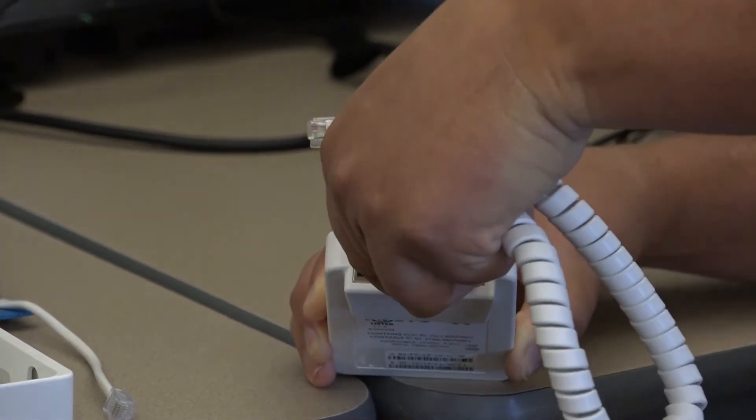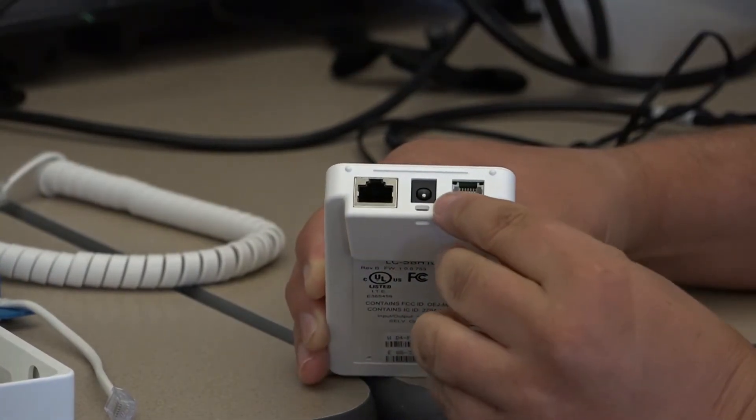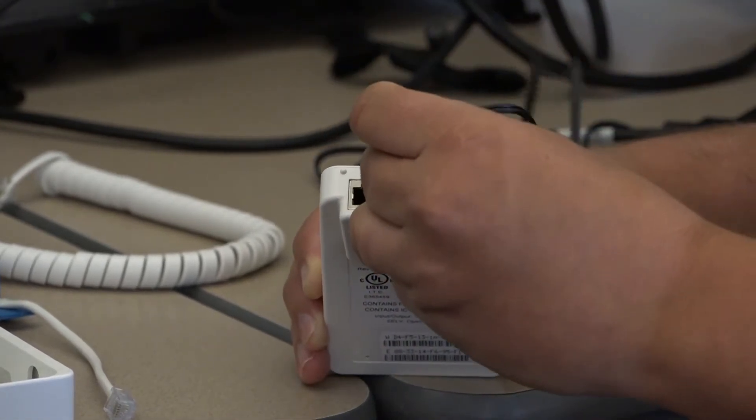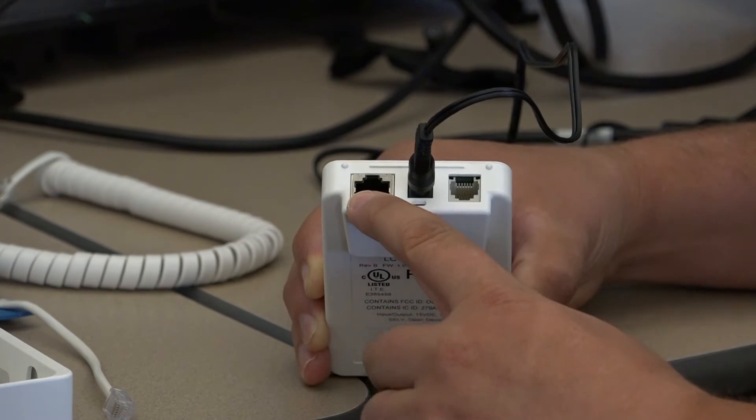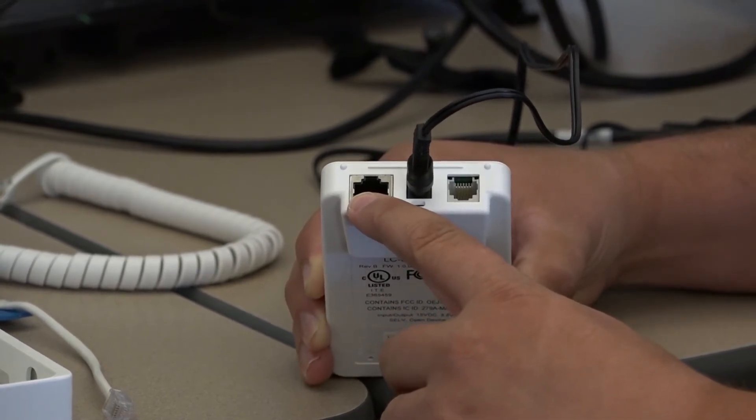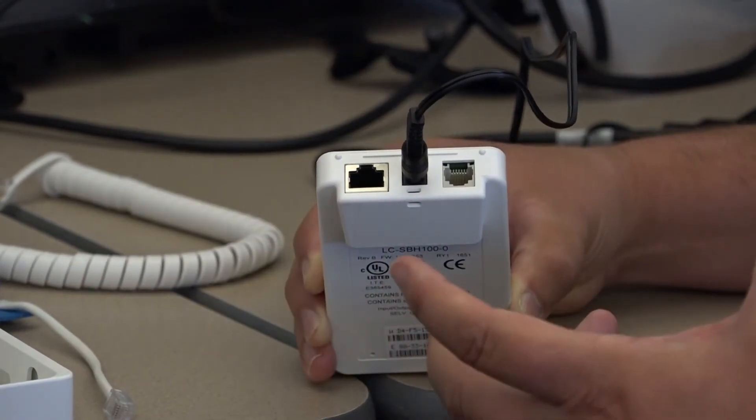The other ports on the top of the Smart Building Hub are the power port, so that's where we would plug in permanent power, and the Ethernet port, or IP port, which would connect into a building network. So that way you can get on a customer's network.